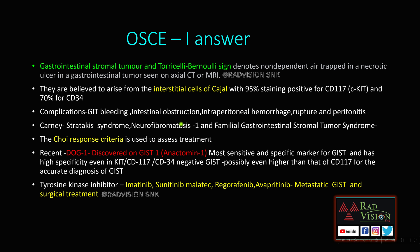The complications of GIST include GIT bleeding, intestinal obstruction, intraperitoneal hemorrhage, rupture, and peritonitis. Two syndromes commonly associated with GIST are Carney-Stratakis syndrome and Neurofibromatosis type 1, and familial GIST syndrome. The response criteria used to assess treatment is the Choi response criteria.